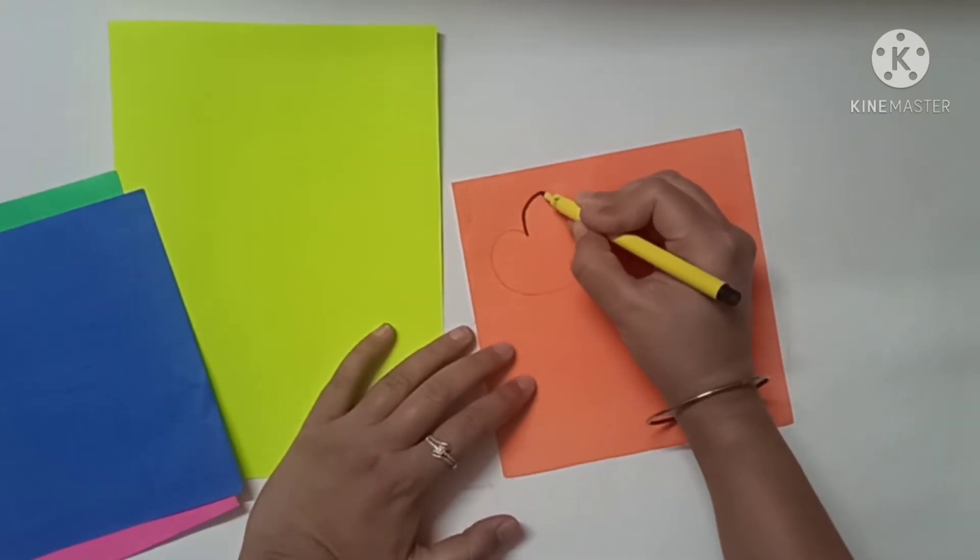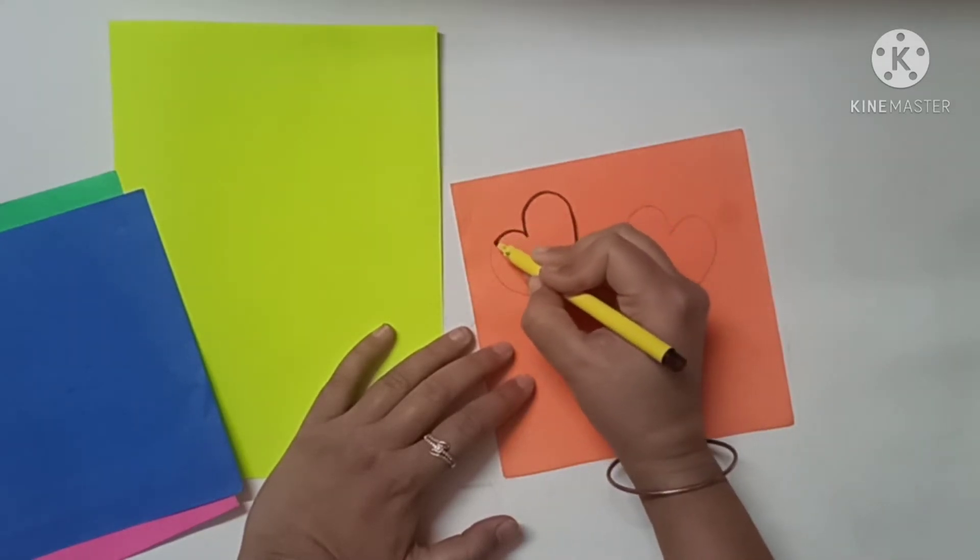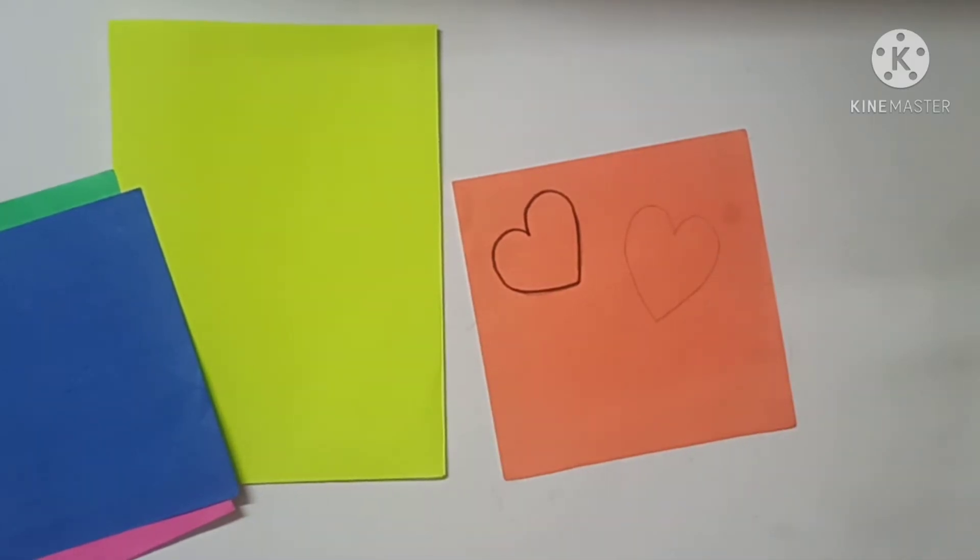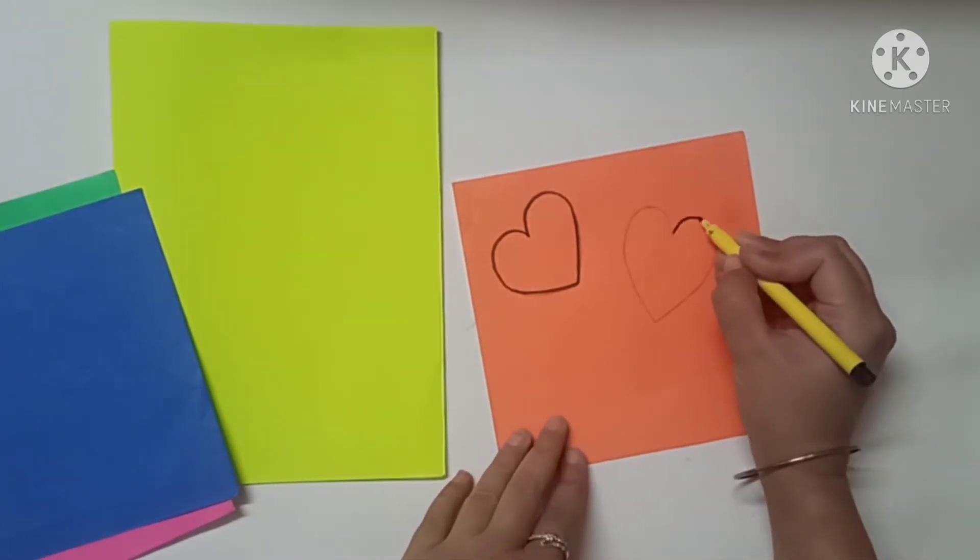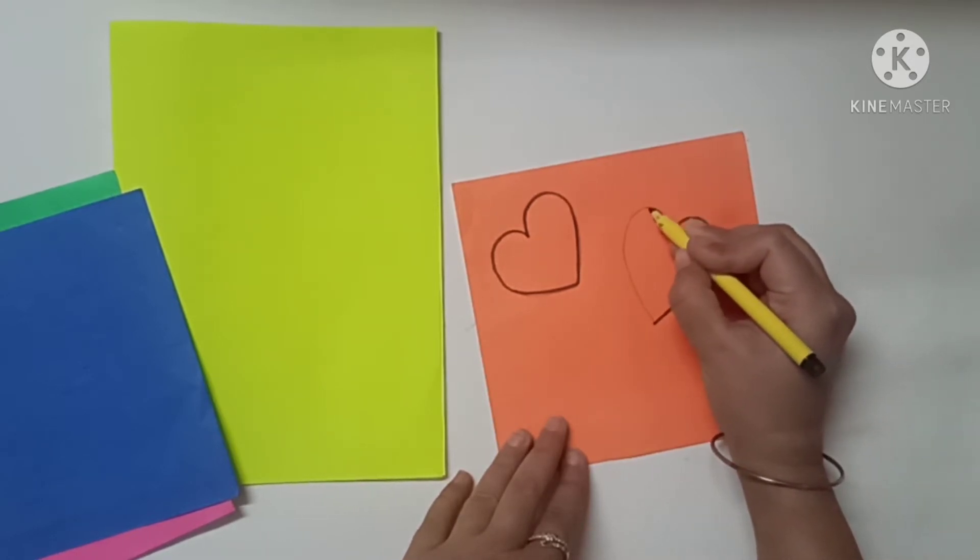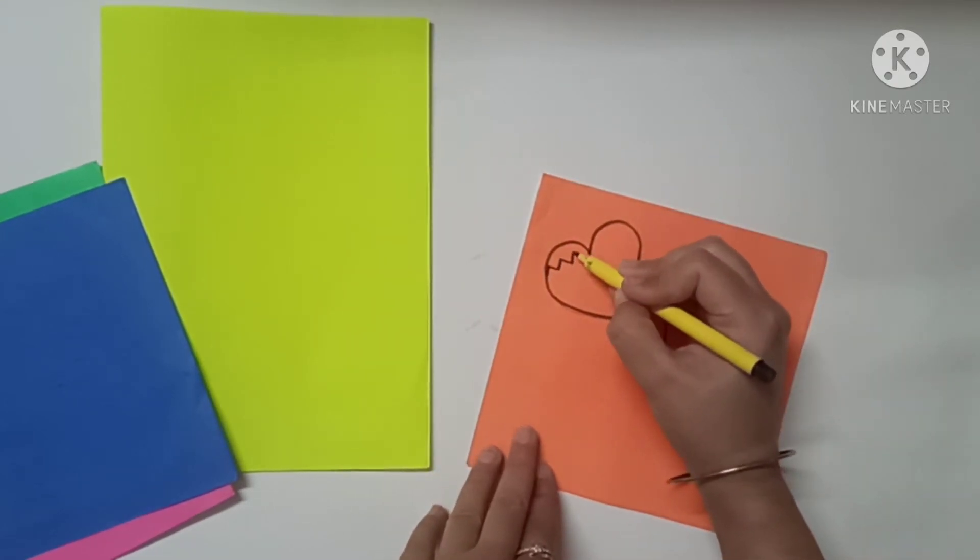Now take a black sketch pen to do the outlining. Next we will draw patterns inside these hearts.